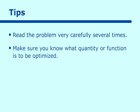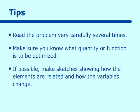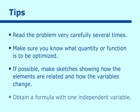The second tip is to make sure you know what quantity or function is to be optimized. That is very important because in several problems you will have more than one function to deal with. The third thing is to make sketches if possible — a picture is worth a thousand words. Make sketches of how the elements are related and how the variables change. The next item is to obtain a formula with one independent variable. In related rates you can use two independent variables at different times, but in optimization problems we only need one, so everything has to be transformed into one independent variable.